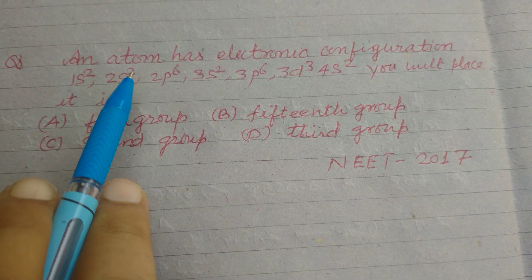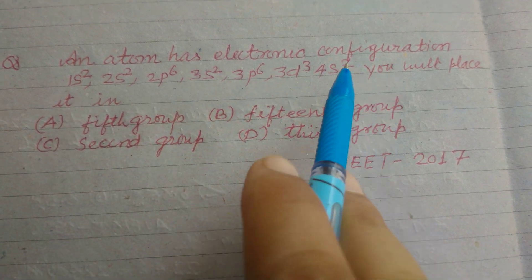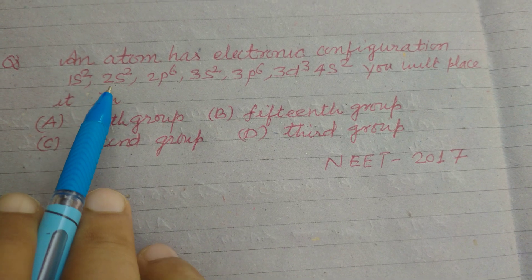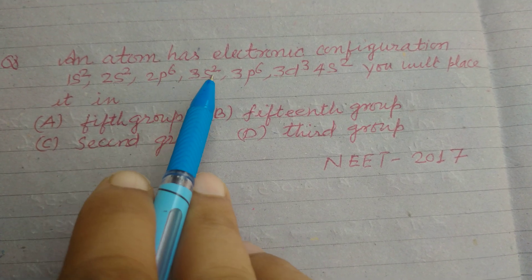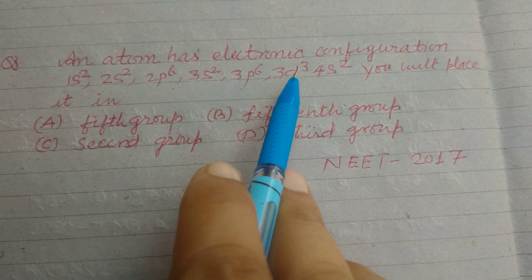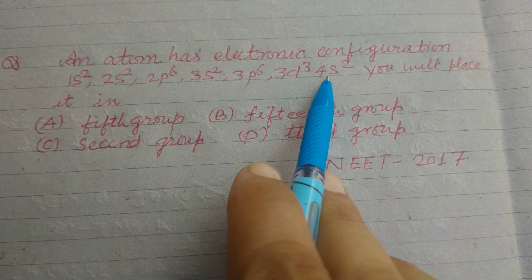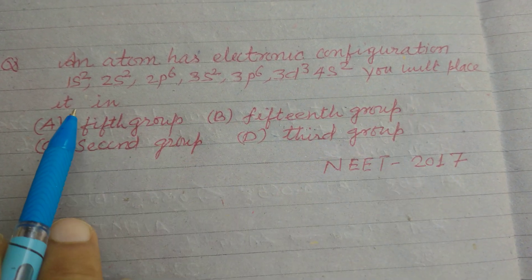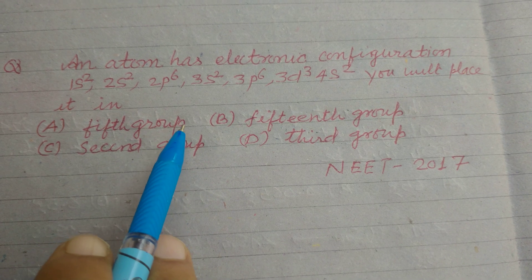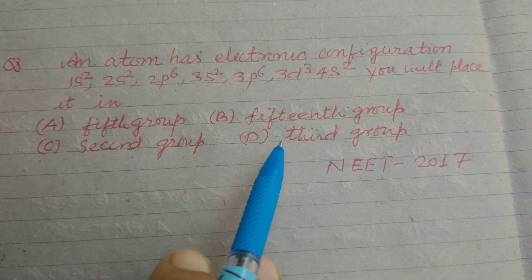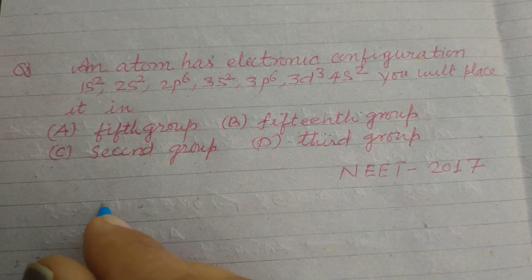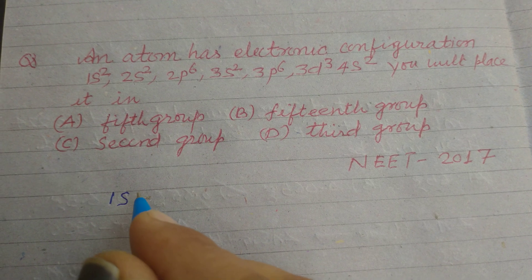Hello students. An atom has electronic configuration 1s2 2s2 2p6 3s2 3p6 3d3 4s2. You will place it in fifth group, 15th group, second group, or third group? So student, here electronic configuration is given.